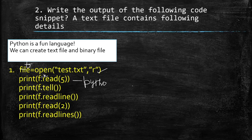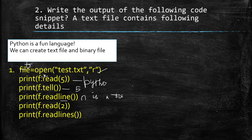Next, print(f.tell()) — the tell function tells where the current file pointer is located. After reading 5 characters, the pointer is at position 5. Next, print(f.readline()) — readline reads from the current pointer position, so the output starts with 'n' and continues with the remaining content: 'n is a fun language'.